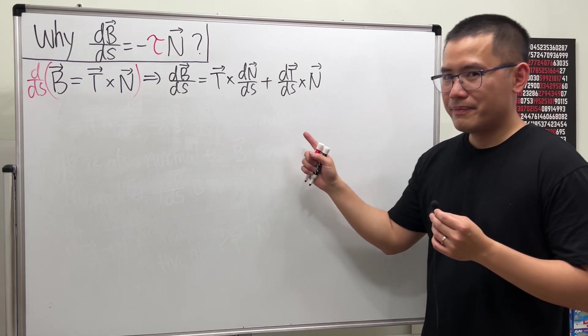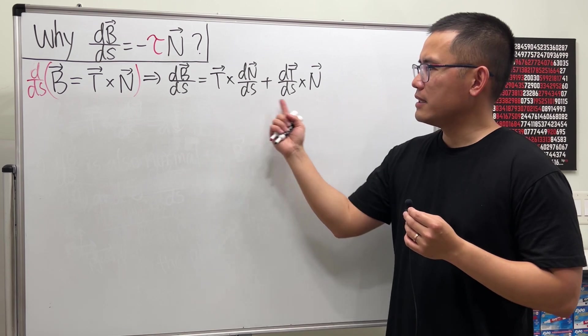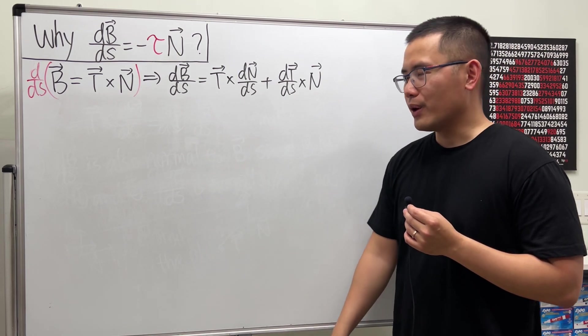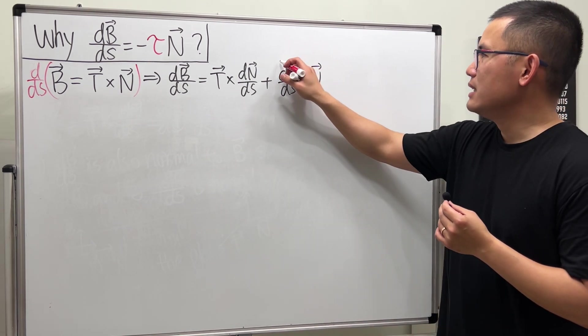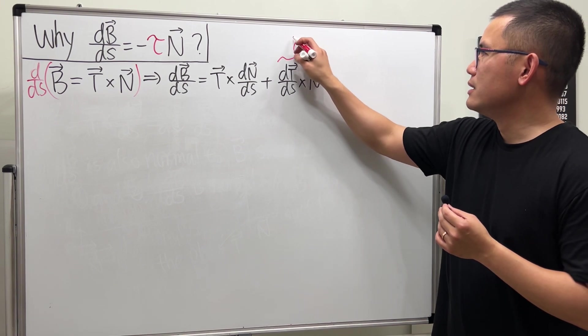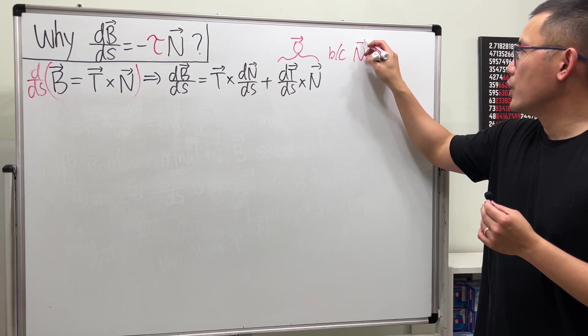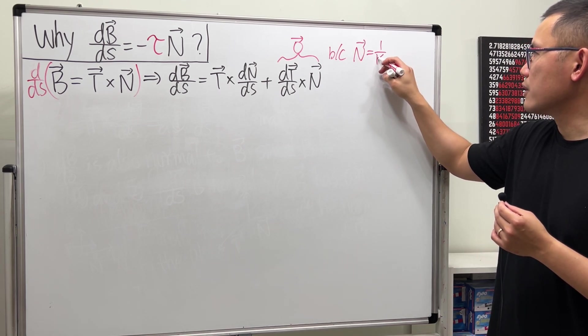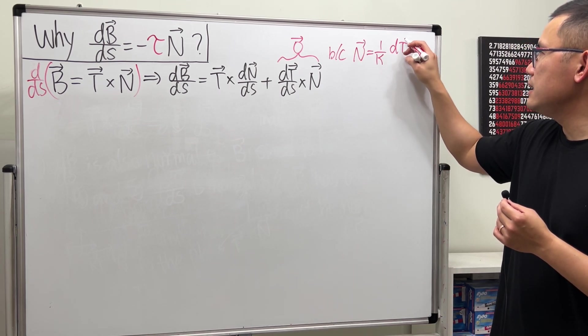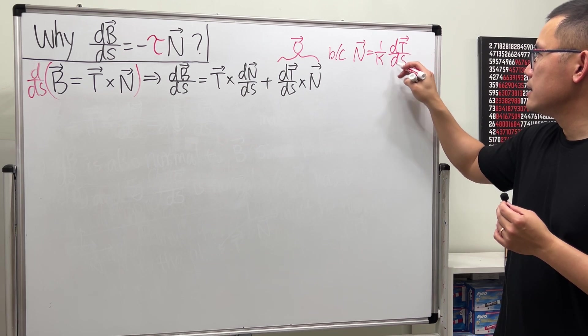Now, the question is, how can we simplify this expression? Well, the truth is, this part is really just equal to the zero vector. Why? Because N, which is equal to 1 over the curvature kappa, times dT/ds.